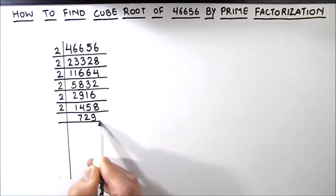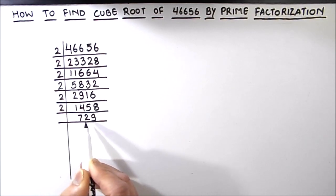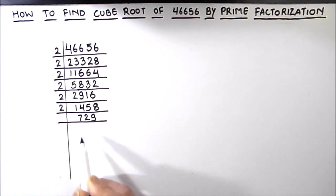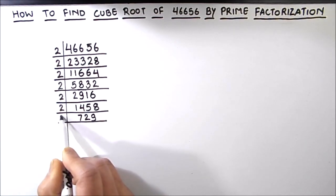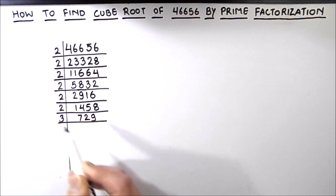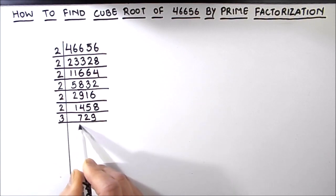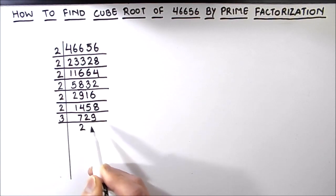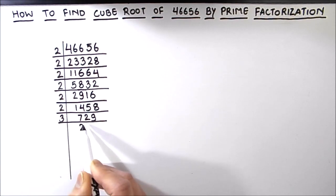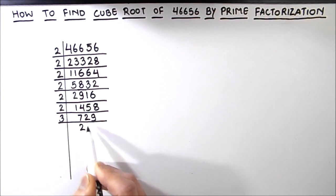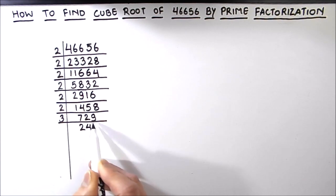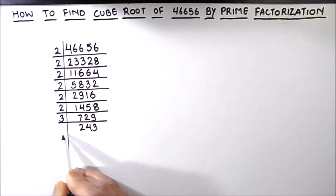Now this is an odd number. Let's try dividing it by the next prime number which is 3. 3 times 2 is 6, then 1 is remainder, this becomes 12, 3 times 4 is 12 and 3 times 3 is 9.